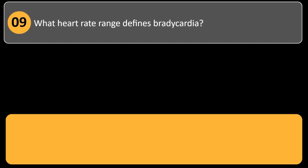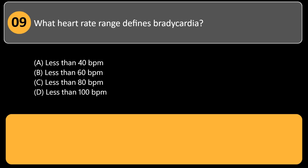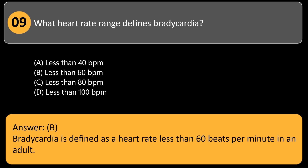What heart rate range defines bradycardia? A. Less than 40 BPM. B. Less than 60 BPM. C. Less than 80 BPM. D. Less than 100 BPM. Answer: B. Bradycardia is defined as a heart rate less than 60 BPM in an adult.